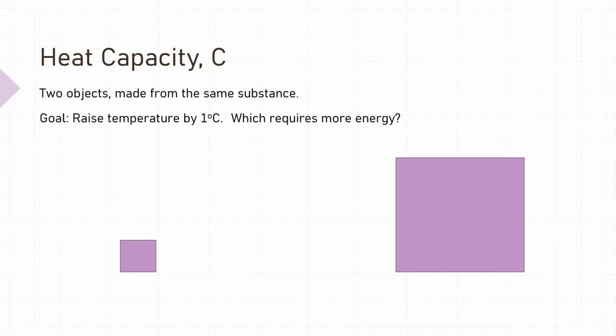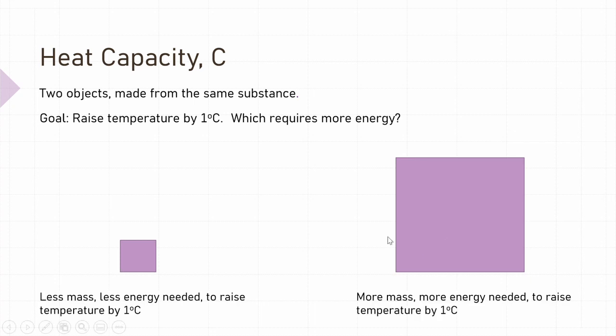Let us start with a thought experiment. Let's say we have two objects — two cubes — both made from the exact same substance, the exact same material, but one cube is bigger than the other. If our goal is to increase the temperature by 1 degree Celsius, which cube would require more energy? Since to increase the temperature of a substance we need to supply the atoms with more energy, and higher mass equals more atoms, logically we would expect that the cube with the larger mass would need more energy to increase its temperature by the same amount compared to the smaller cube.